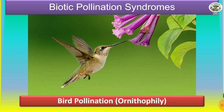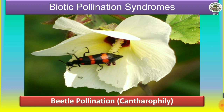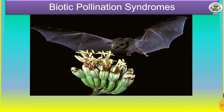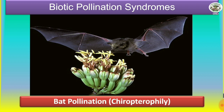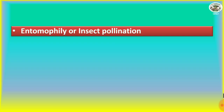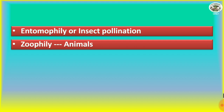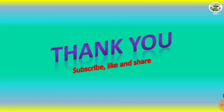Fly pollination is called myophily and sapromyophily. Bird pollination is called ornithophily, and bat pollination is called chiropterophily. The collective name for pollination done by insects is entomophily, and that done by animals is called zoophily. This was all about pollination syndromes. Thank you.